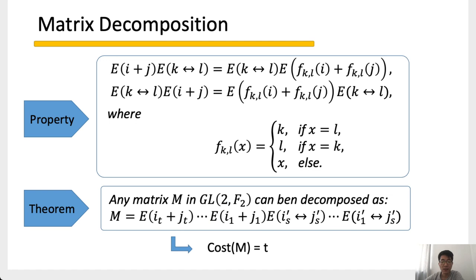After obtaining a matrix decomposition, we can always rearrange the order of elementary matrices. This property allows us to swap the positions of a type-1 and a type-3 matrix, with the type-3 matrix slightly modified. Based on this, any invertible matrix can be decomposed as a series of type-1 and type-3 matrices, with all type-3 matrices on the left and all type-1 matrices on the right. For simplicity, since type-1 matrices have low cost, we always assume an invertible matrix can be expressed as a product of type-3 matrices only.